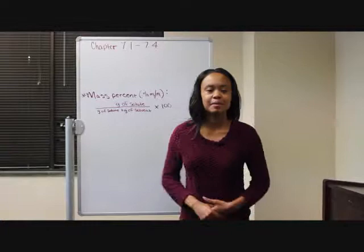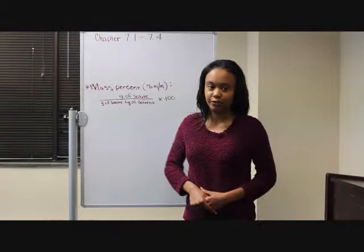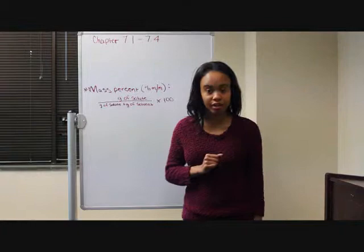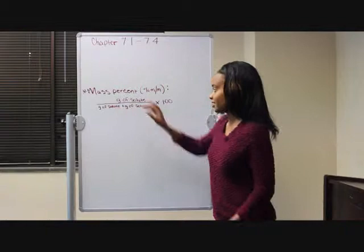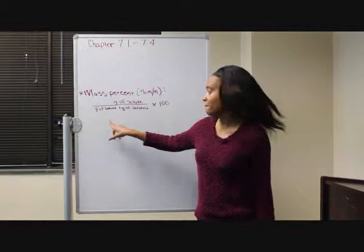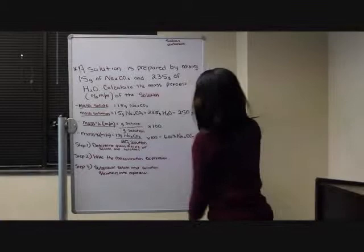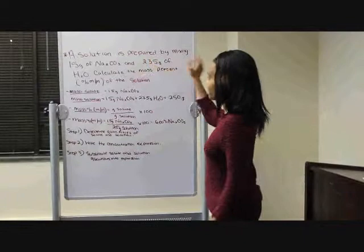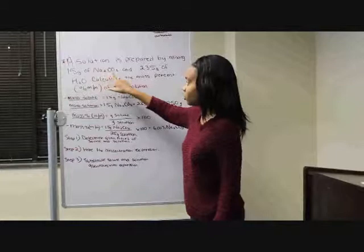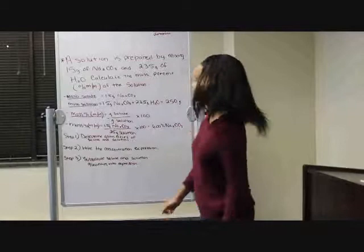Hello, my name is Kia Harris. I'm a freshman nursing student at North Carolina Agricultural and Technical State University. Today I will be discussing chapters 7.1 through 7.4. Before I begin with the equation, I will first define the mass percent. The mass percent is the mass of a solute divided by the mass of the solute plus the mass of the solvent, multiplied by 100. The question states: a solution is prepared by mixing 15 grams of sodium carbonate (Na₂CO₃) and 235 grams of H₂O (water). Calculate the mass percentage of the solution.